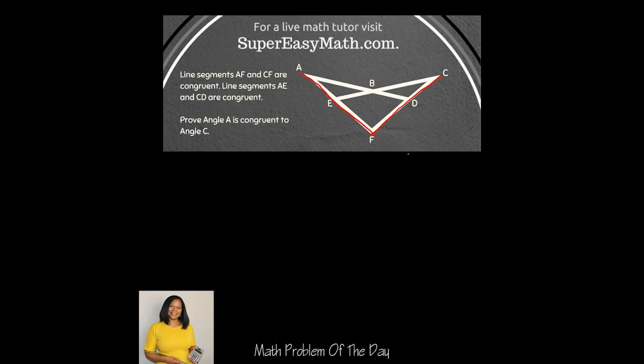The second sentence says line segments AE and CD are congruent. So what that means is line AE right here and CD are congruent. As you can see, we're pretty much just continuing with this symmetrical image when I highlight these certain areas.